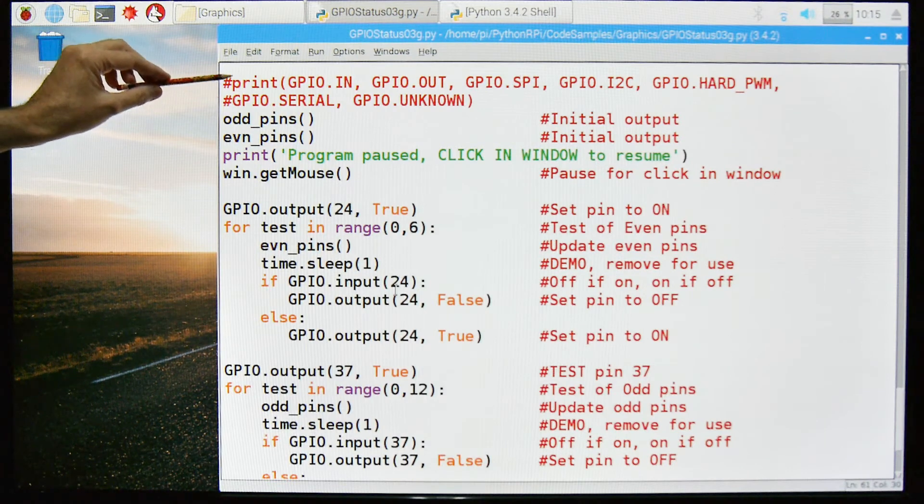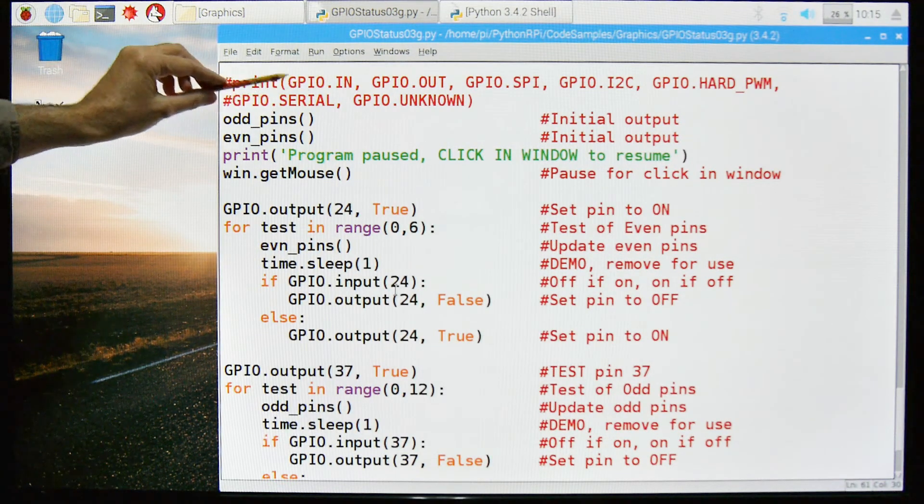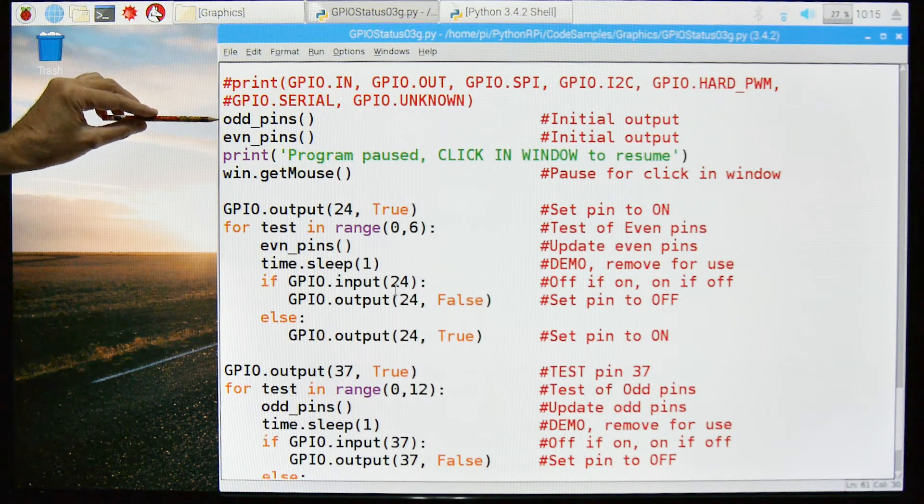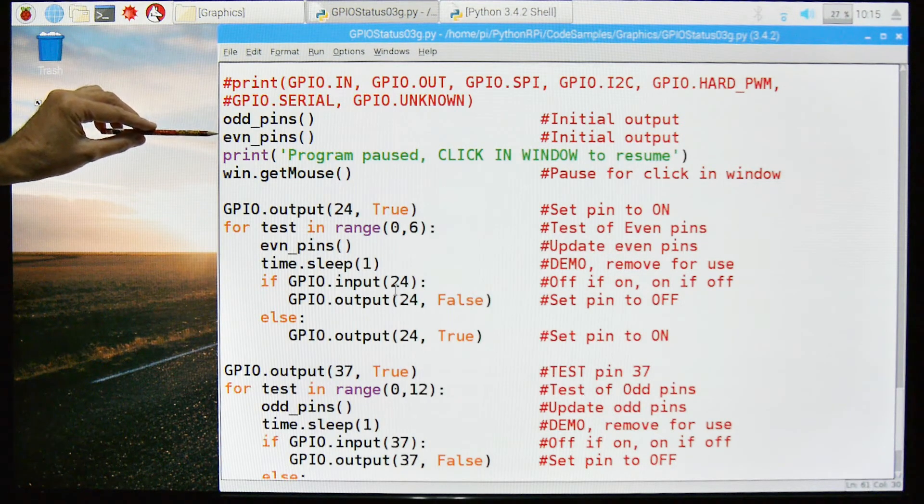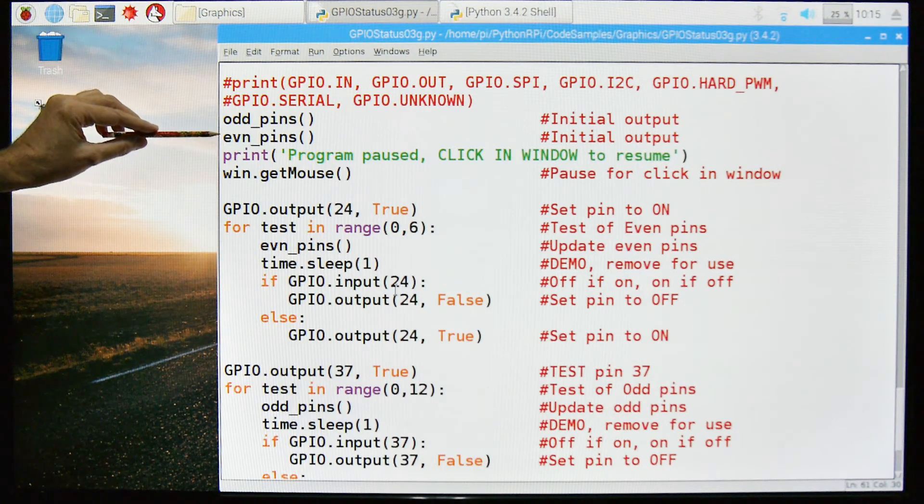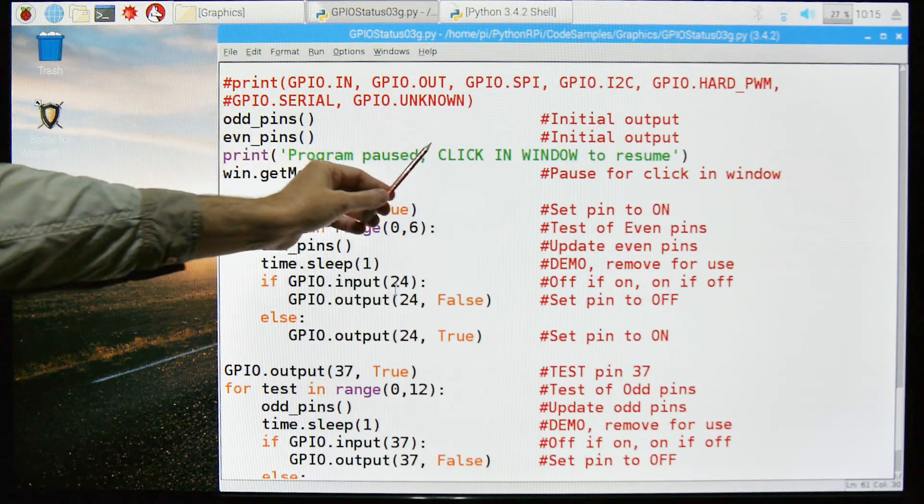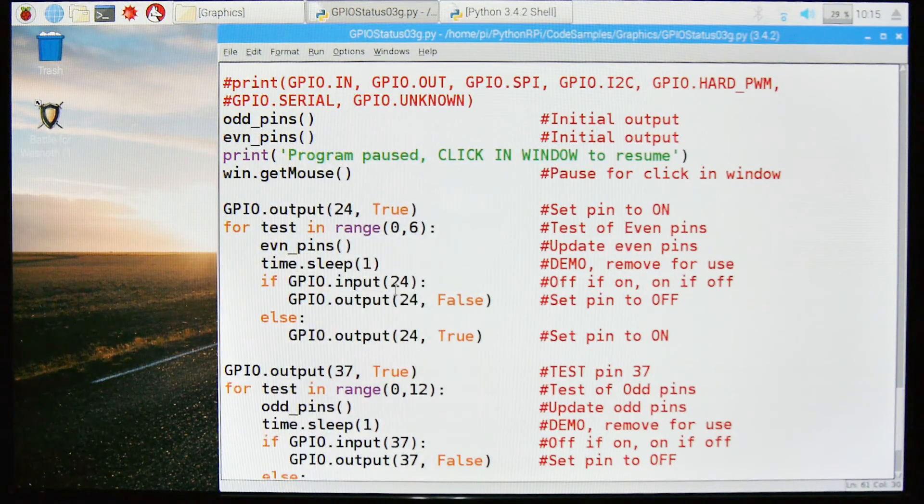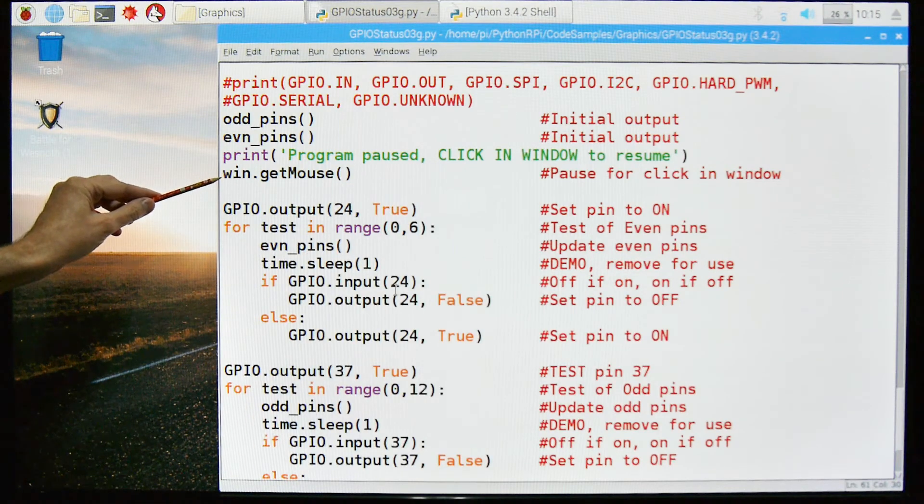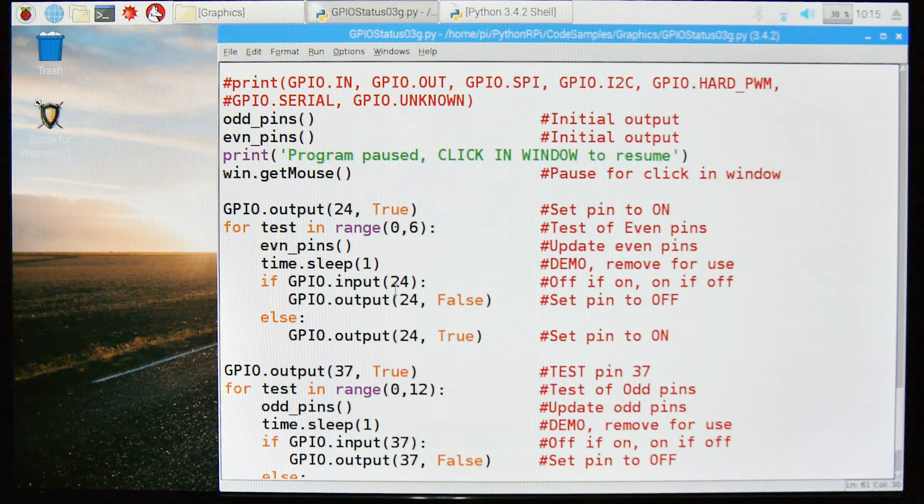This is just a debug statement, it's kind of fun to print out, you can see what the values of all these are. And then we'll start with initializing the values on the window, we'll just execute the odd pins and even pins functions, and that'll put up just the initial data. And then we'll print a statement that says program paused, click in the window to resume, so that's that way we can wait until we're ready to see the results. And then we'll go here, and this is the pause statement, this will wait until there's a click in the window. And at that point, the program will resume.